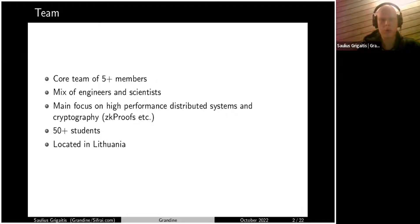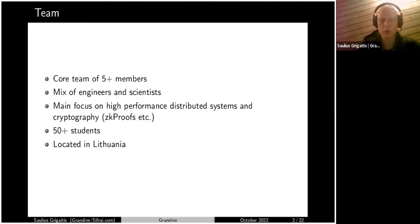We have just a bit more than five core developers — some of them are developers and some have more of an academic background with focus on research. The key focus for the team is high-performance distributed systems. Before entering the blockchain space, we were working on regular web-type systems which were not fault-tolerant, but also high-performance — similar challenges to what we have today with blockchain systems, but in a different setup and angle.